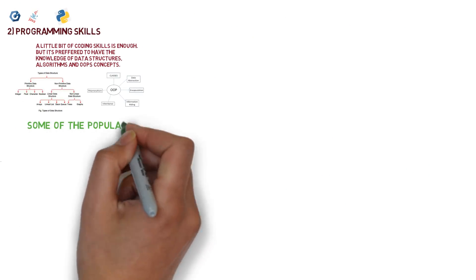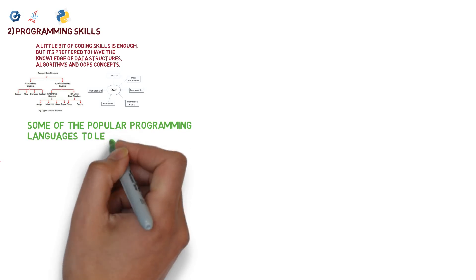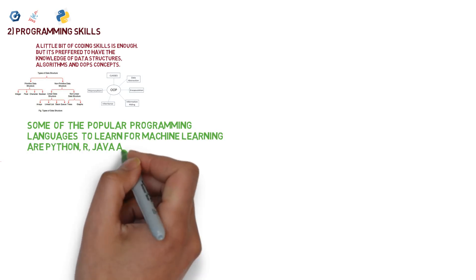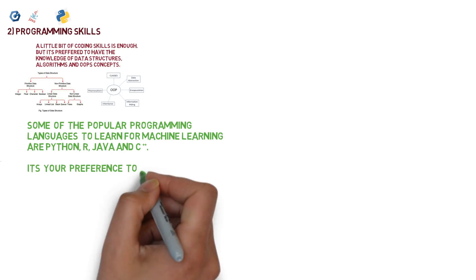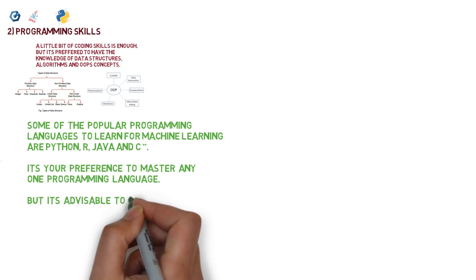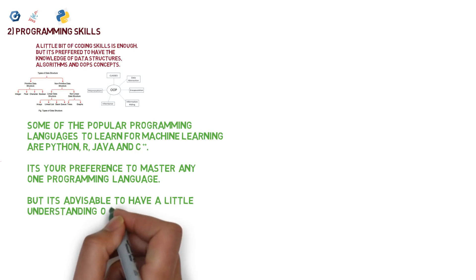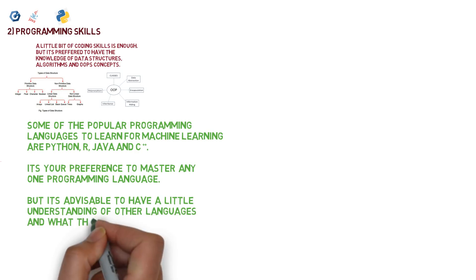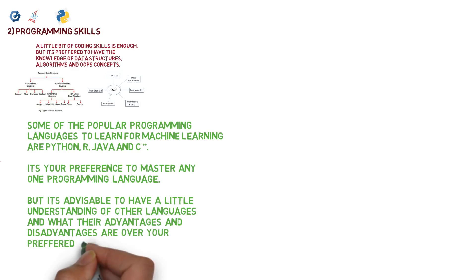Some of the popular programming languages to learn for machine learning are Python, R, Java, and C++. It's your preference to master any one programming language, but it's advisable to have a little understanding of other languages and what their advantages or disadvantages are over your preferred one.